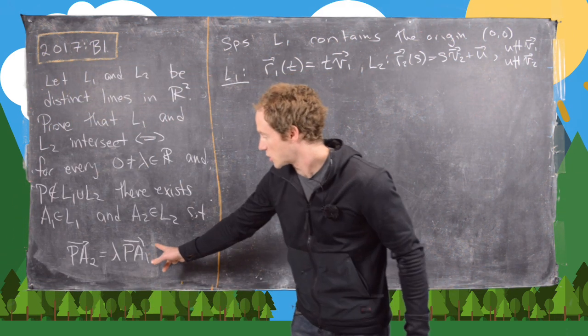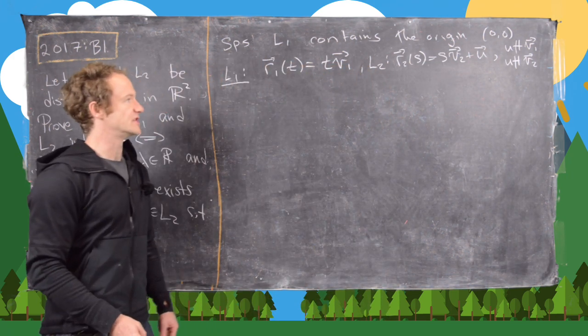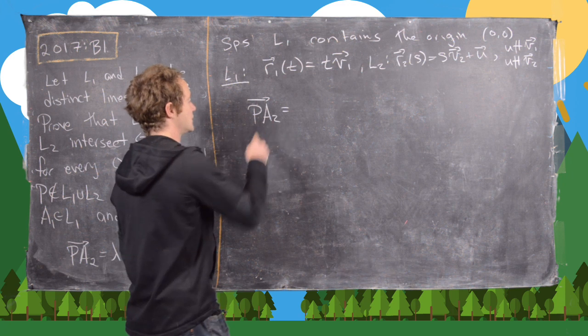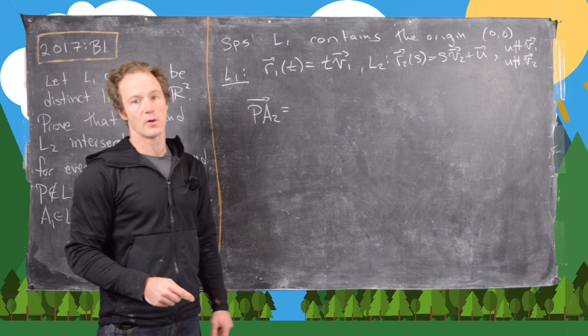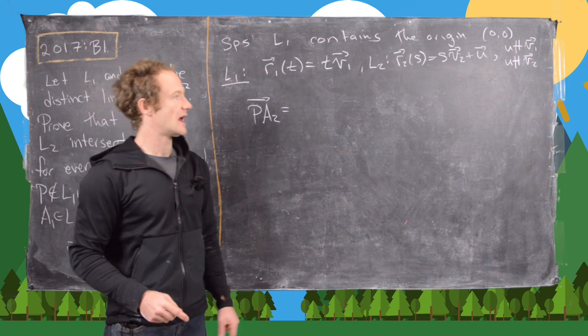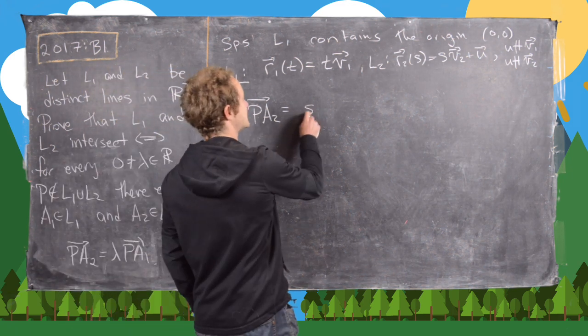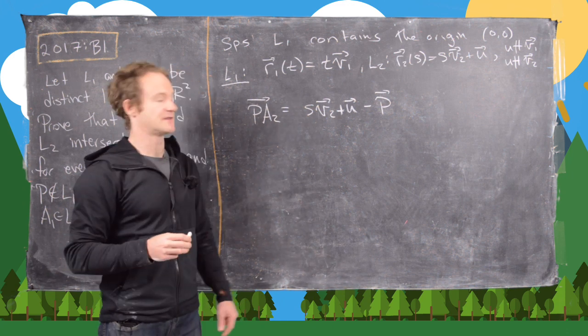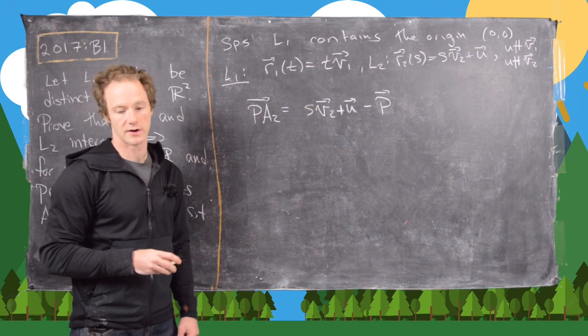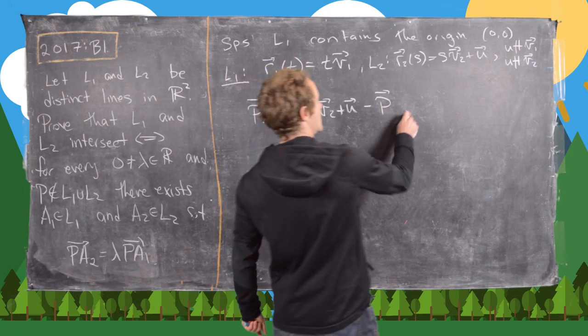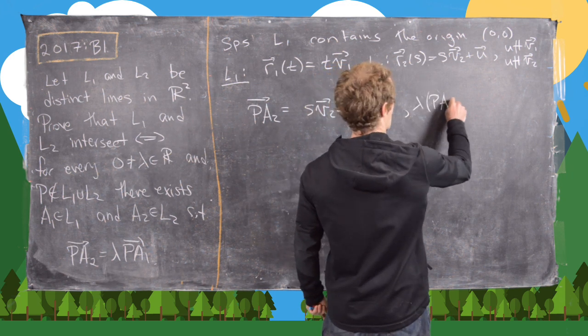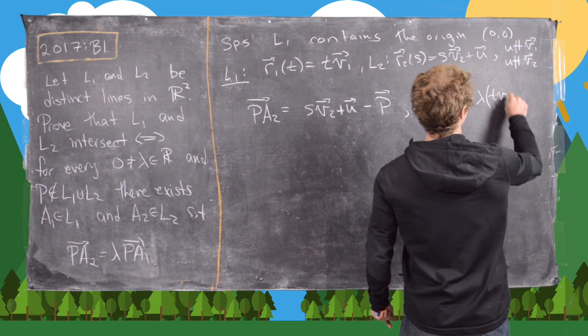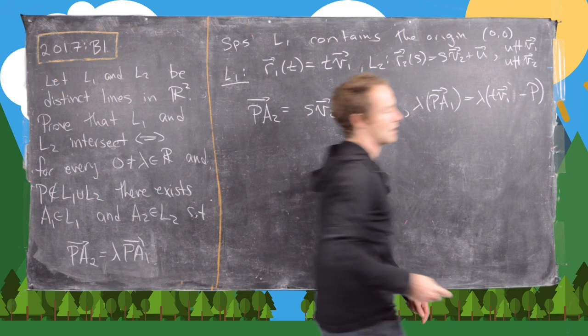Now we want to look at this equation in terms of our parametrizations of these lines. Let's look at the left hand side first. We have PA2, which is a vector from the point P ending at the point A2 which is on the line L2. That's going to be given by s times v2 plus u minus the vector defined by the point P. Similarly, lambda times PA1 can be given by lambda times the quantity T v1 minus P.